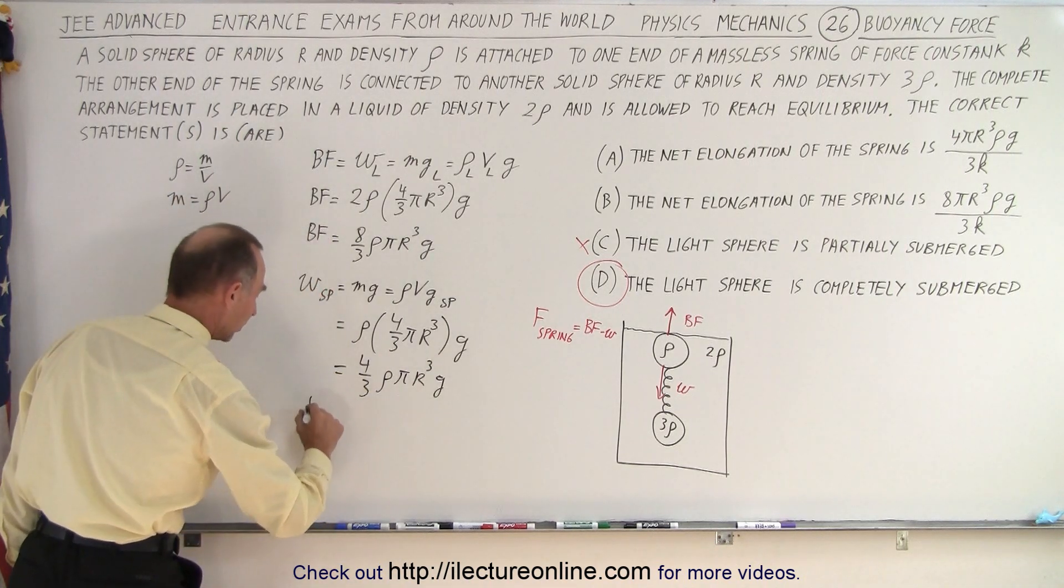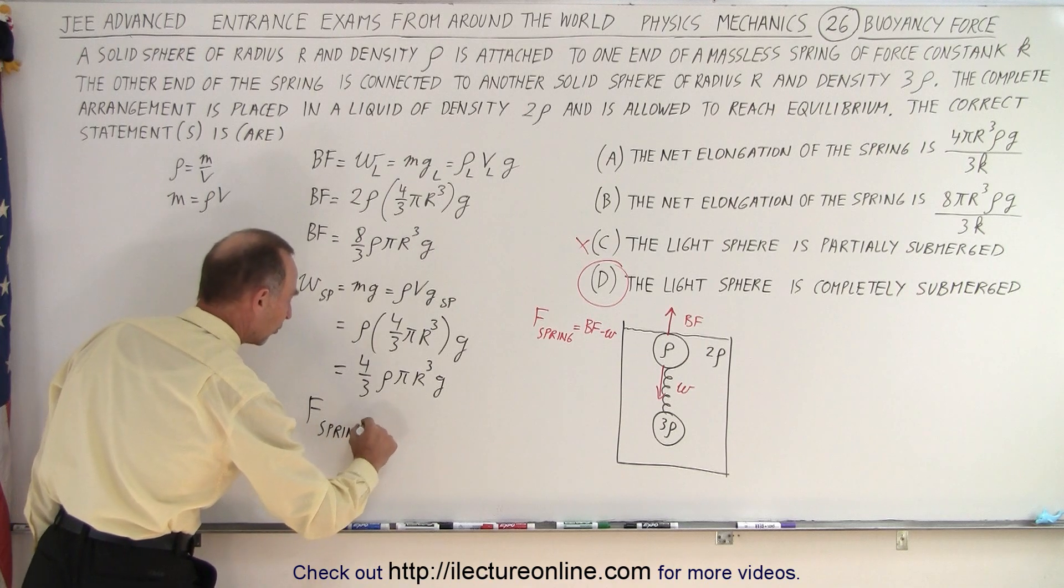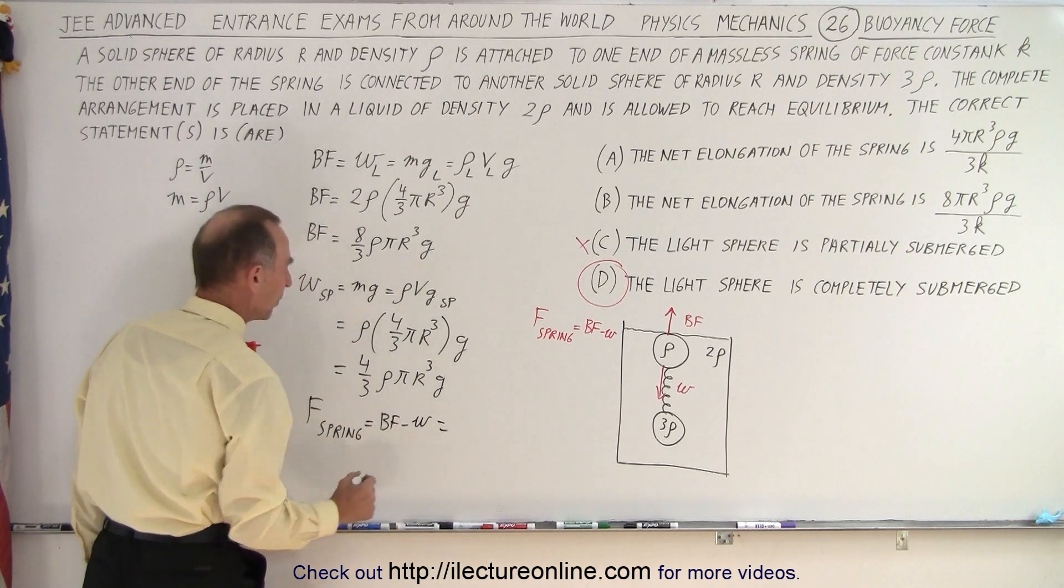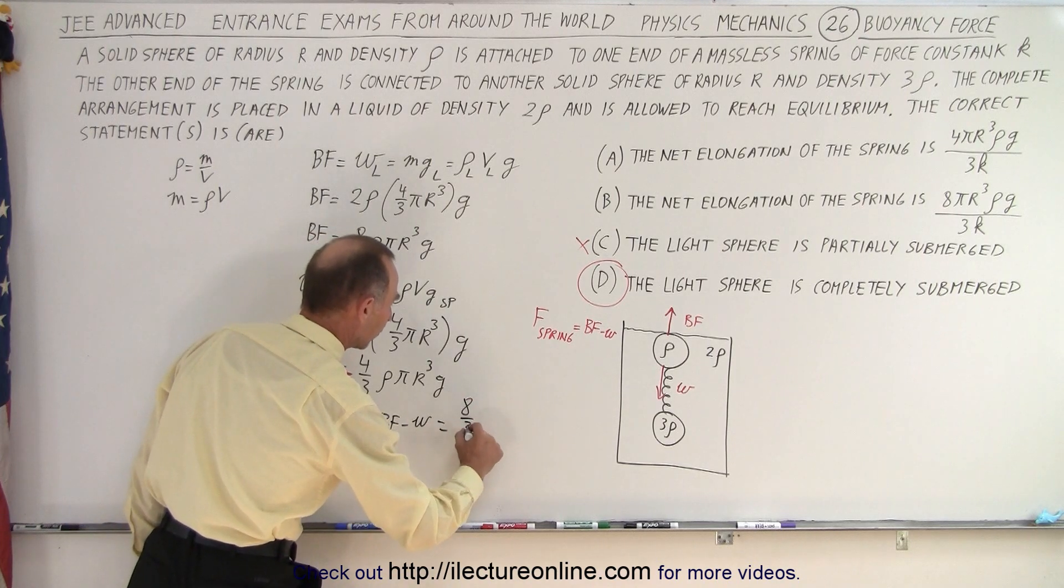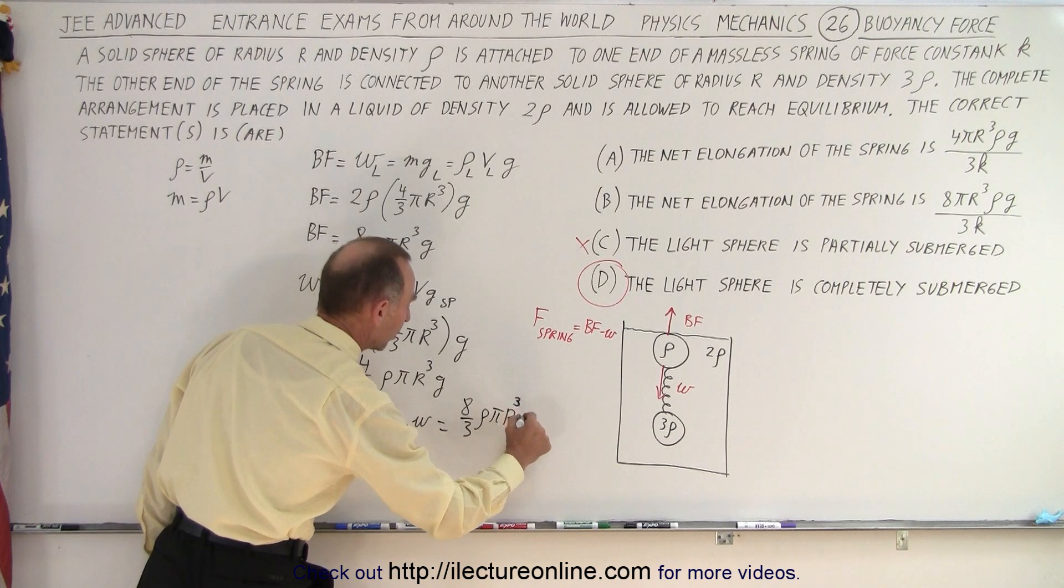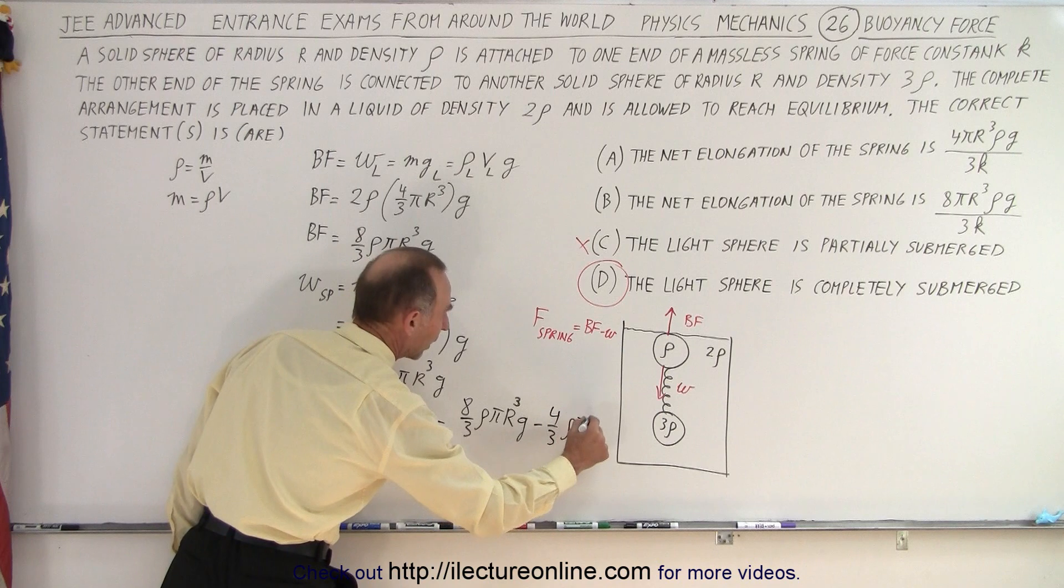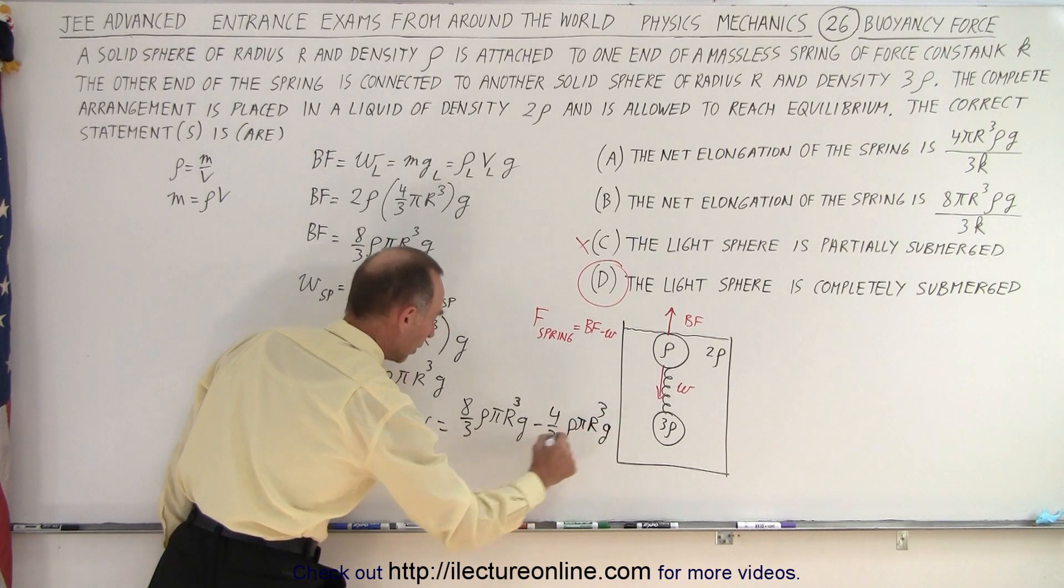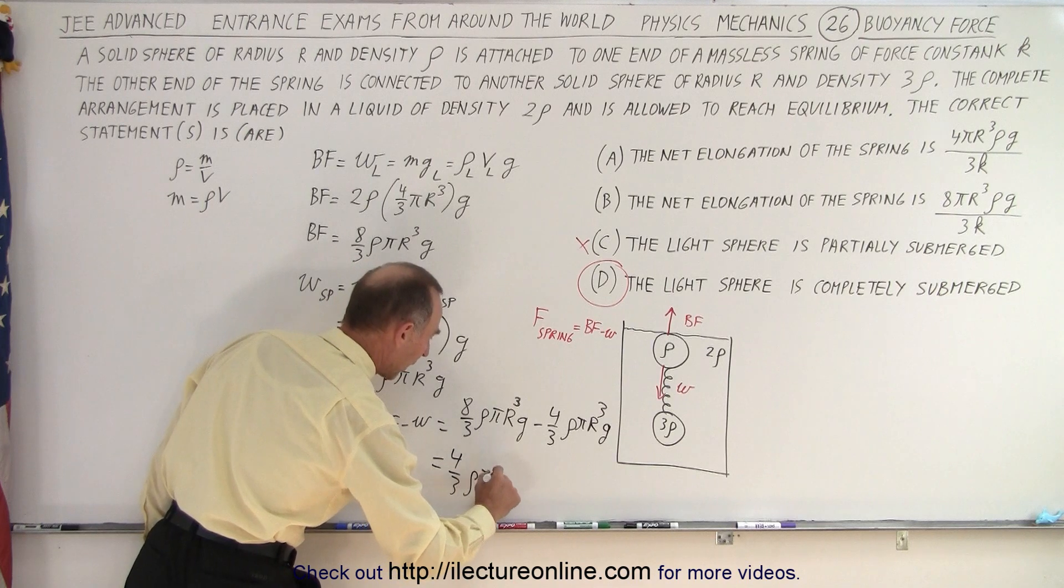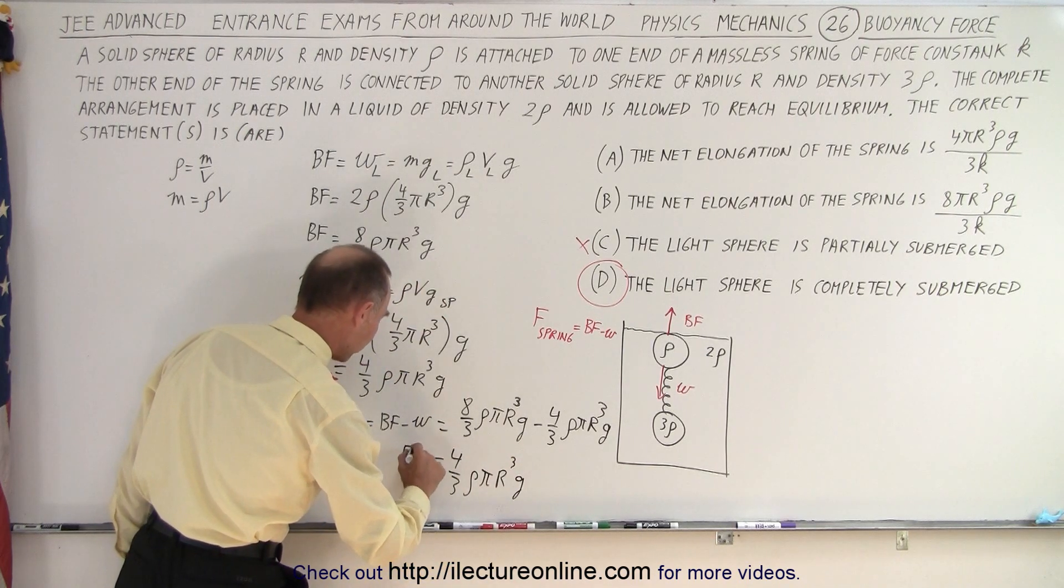And notice if we now want to calculate the force on the spring, which is equal to the buoyancy force minus the weight, that's going to be equal to 8 thirds rho pi r cubed g minus 4 thirds rho pi r cubed g, which is going to be equal to 4 thirds rho pi r cubed g. So that's equal to the force on the spring.